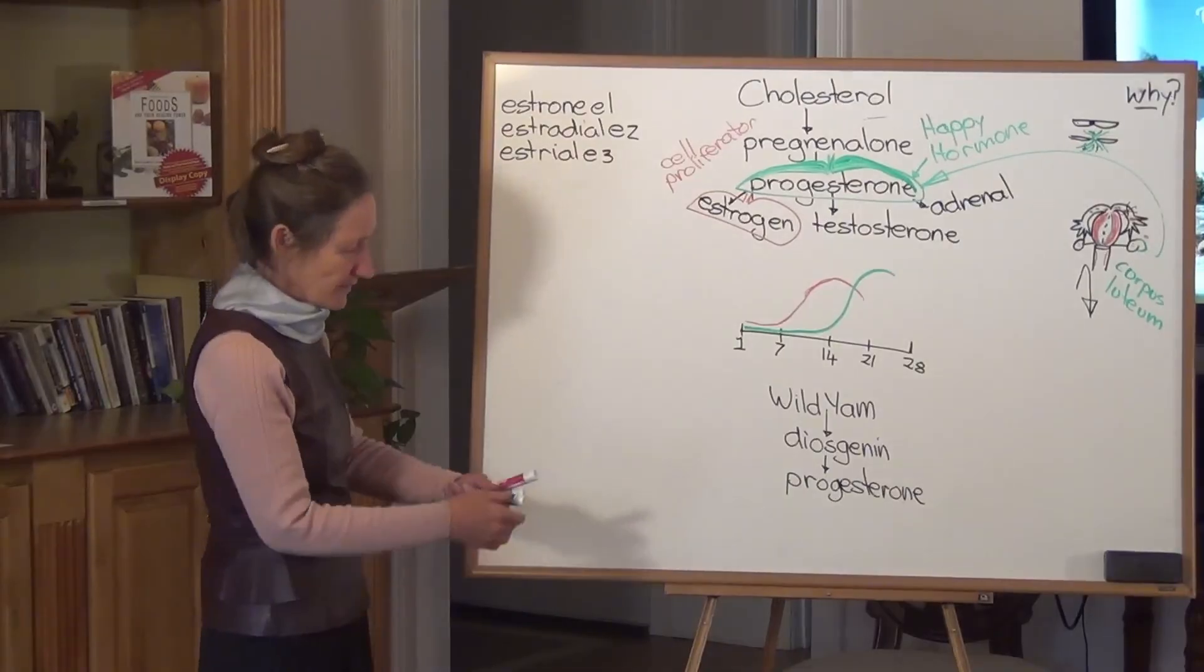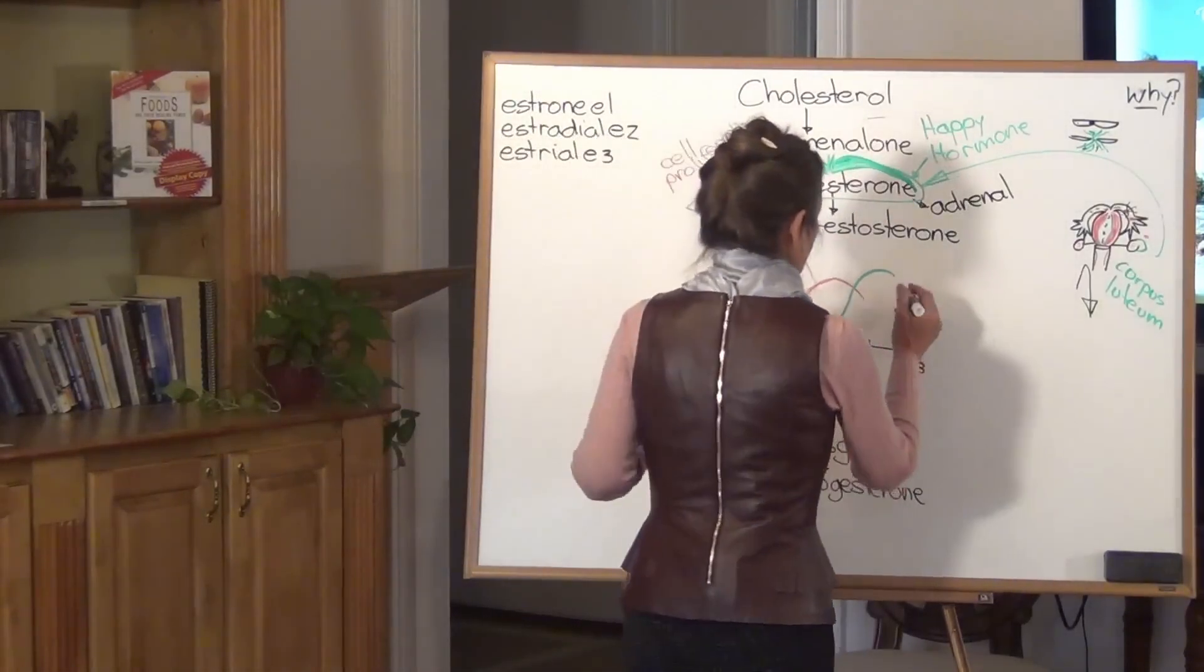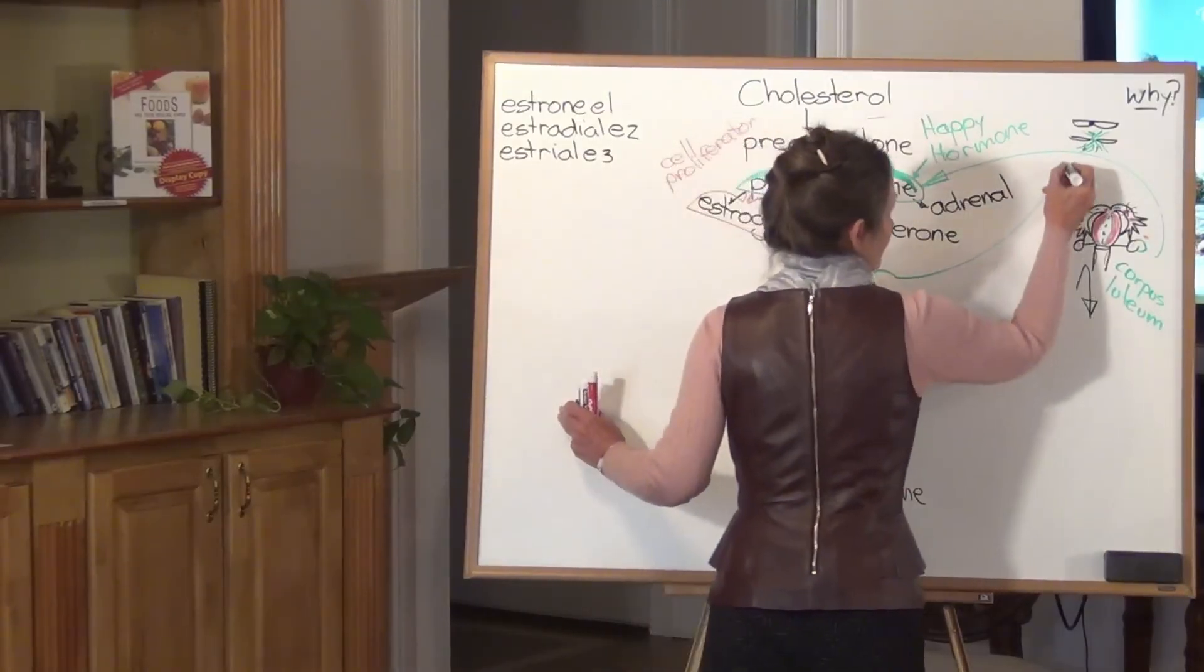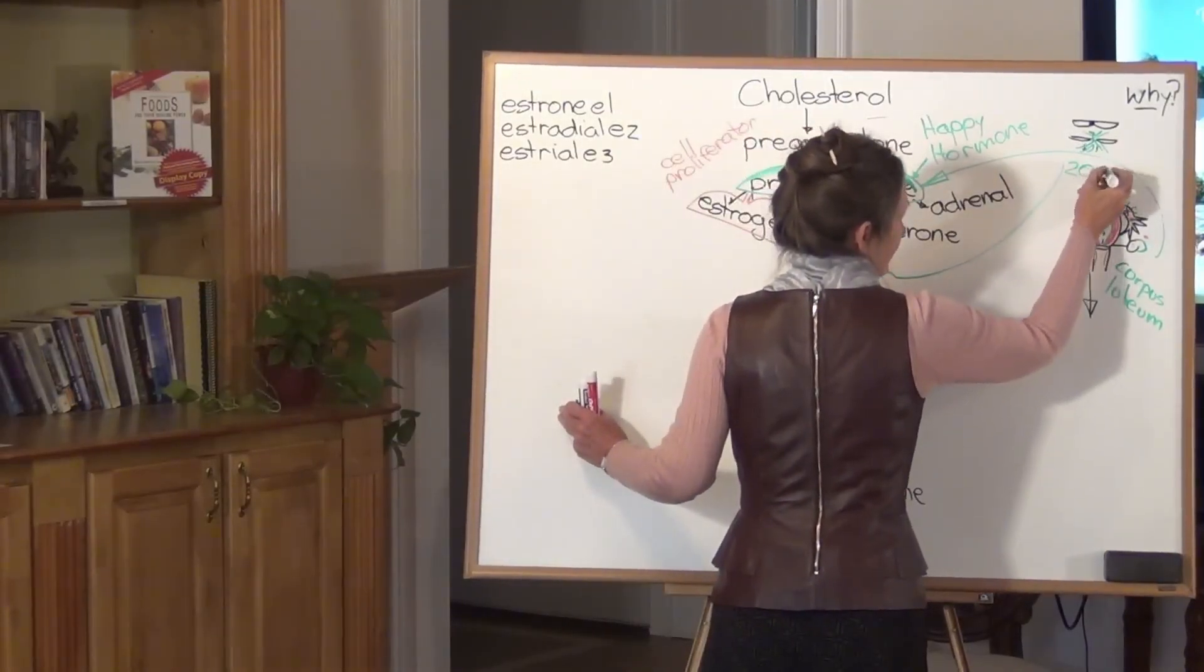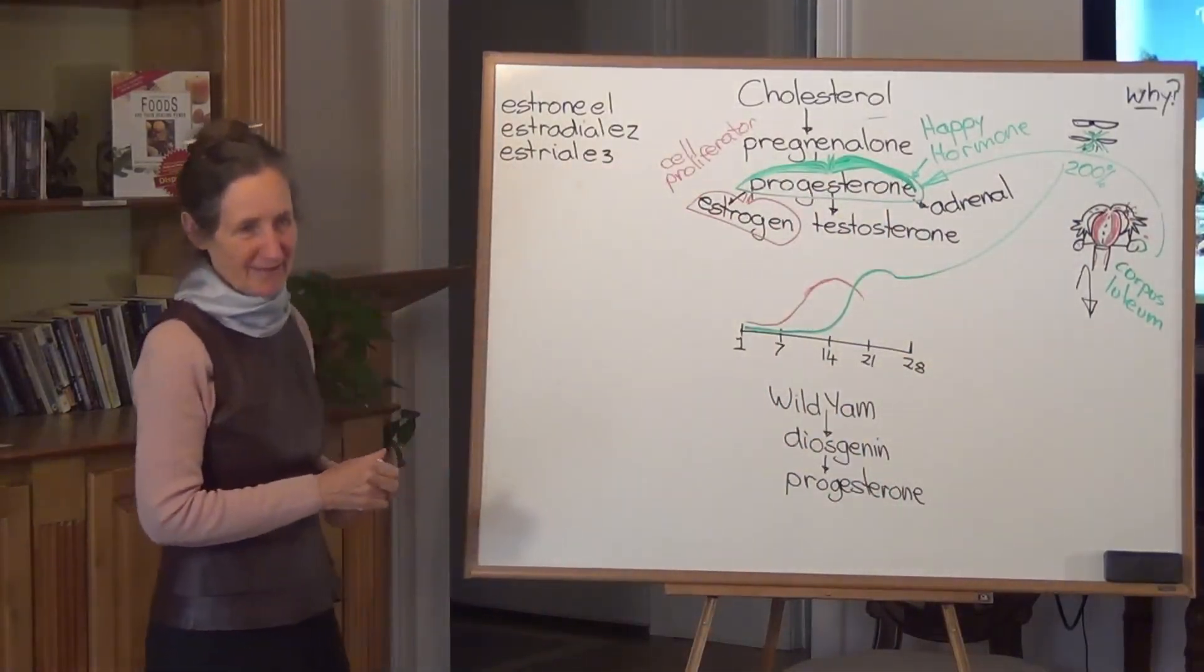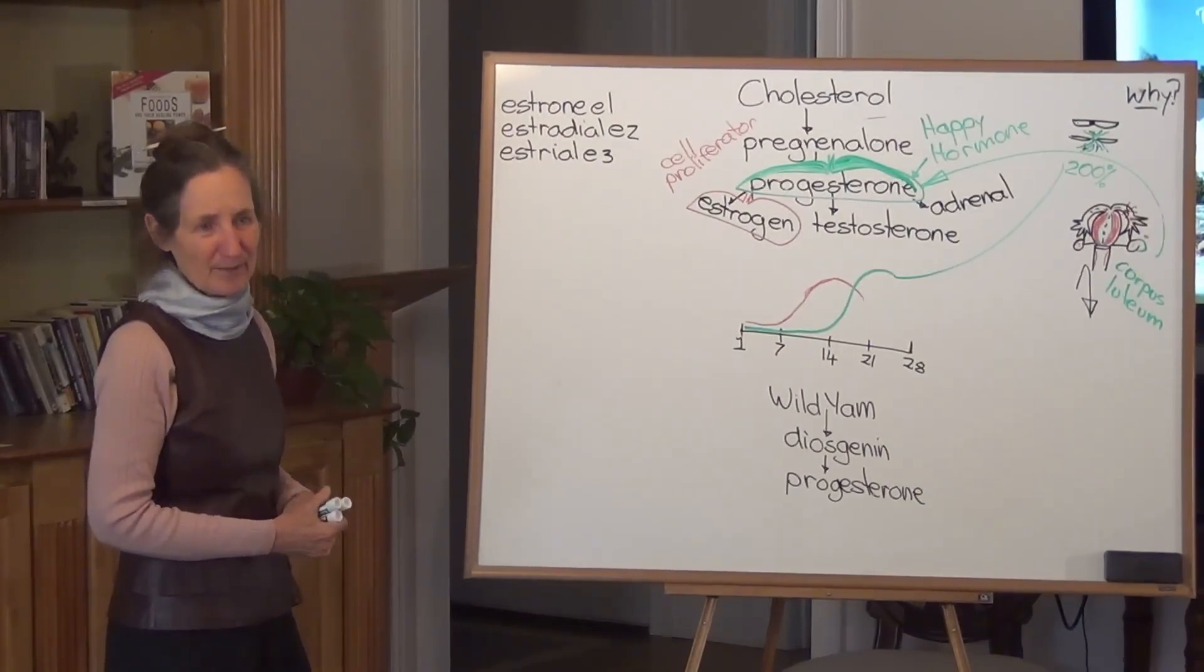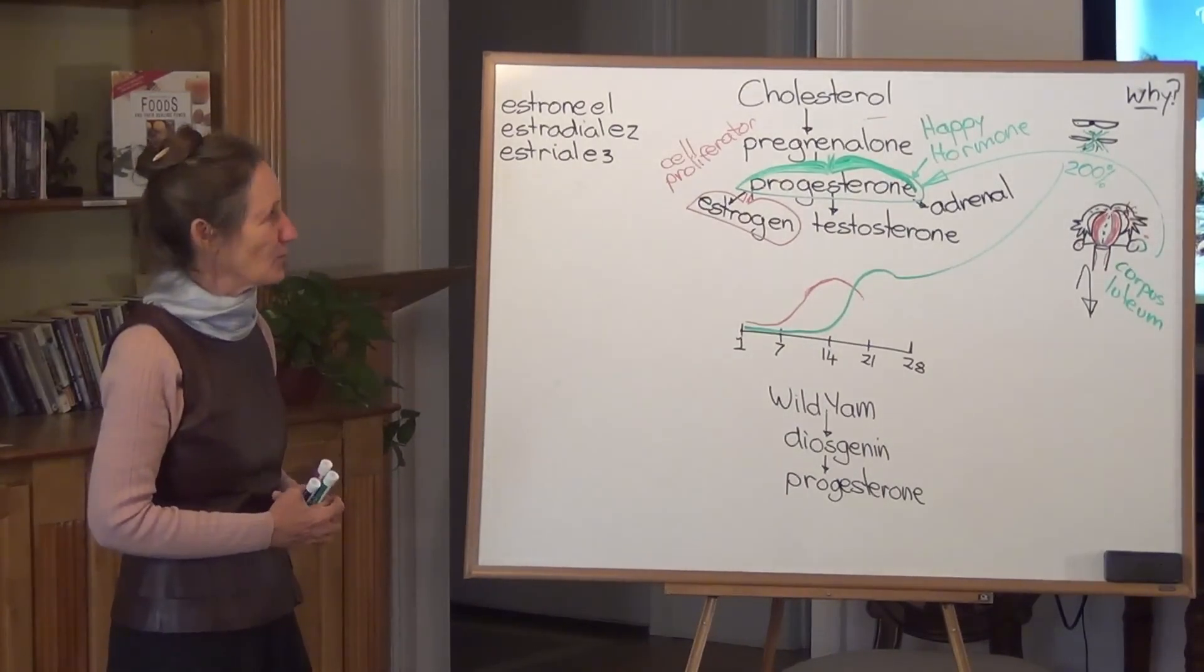So what happens with conception? With conception, progesterone levels soar 200%. Don't we say when a woman's pregnant, she's just blossoming? My daughter-in-law is just blossoming at the moment. Her baby's due, I think, in about three weeks.